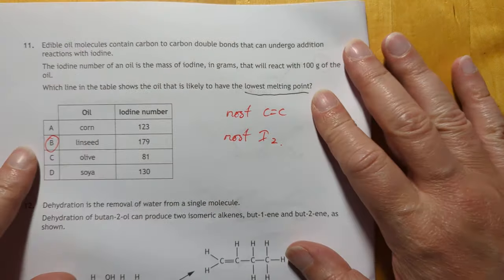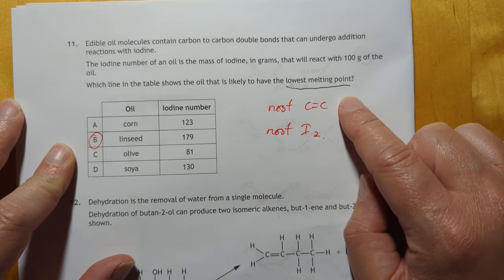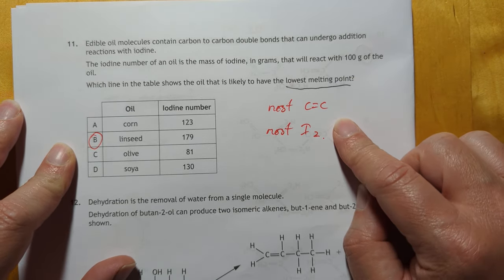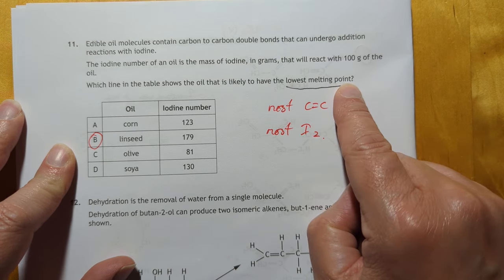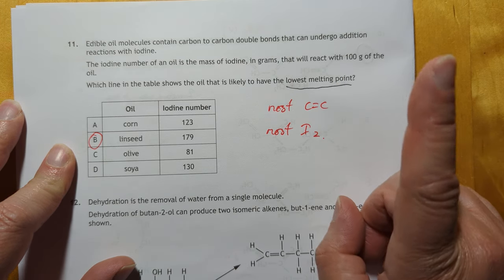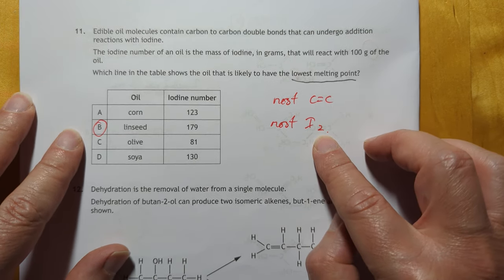Again, sorry about the noise, guys. Edible oils. This is also an old question. The lowest melting point will have the most double bonds, therefore it will have the highest iodine number, which in our case is linseed.